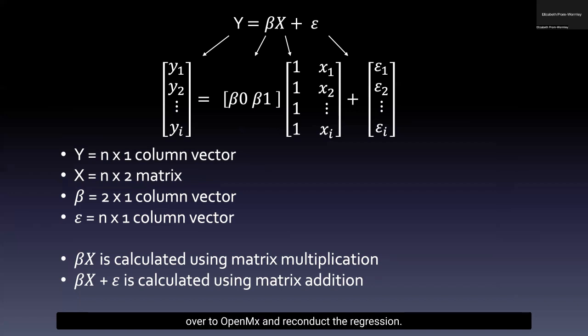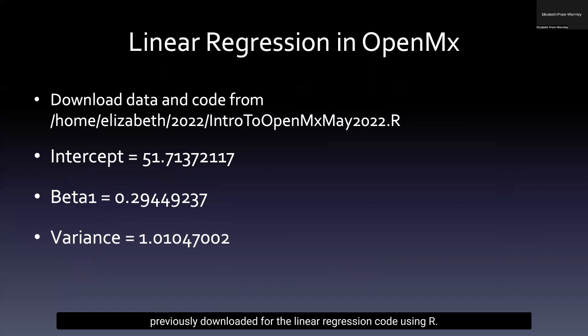And so now we're going to translate that logic over to OpenMX and reconduct the regression in OpenMX. You use the same file that you previously downloaded for the linear regression code using R. And if you were to look at the code beginning on line 52 and run the code from lines 52 to 121 using an OpenMX approach, you would find that you would have intercept values and beta values and beta 1 values, as well as the variance to be similar to what we have here. And if you compare against what had been calculated using the LM function, you'll find that the values would be quite similar, which is great. But just because we saw the answers doesn't mean that we really understand what happened here. So I'm going to take a moment to scroll through our code to see if we can dig in a little bit deeper and understand what's happening under the hood as it applies to the OpenMX code.